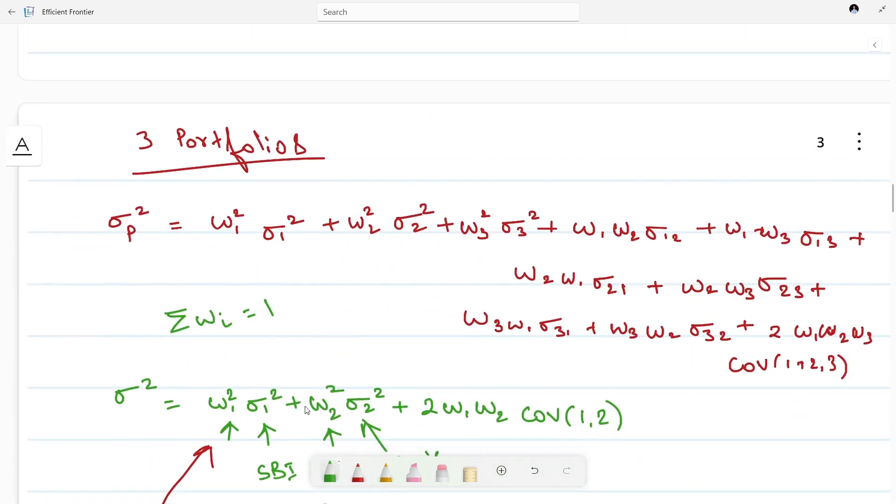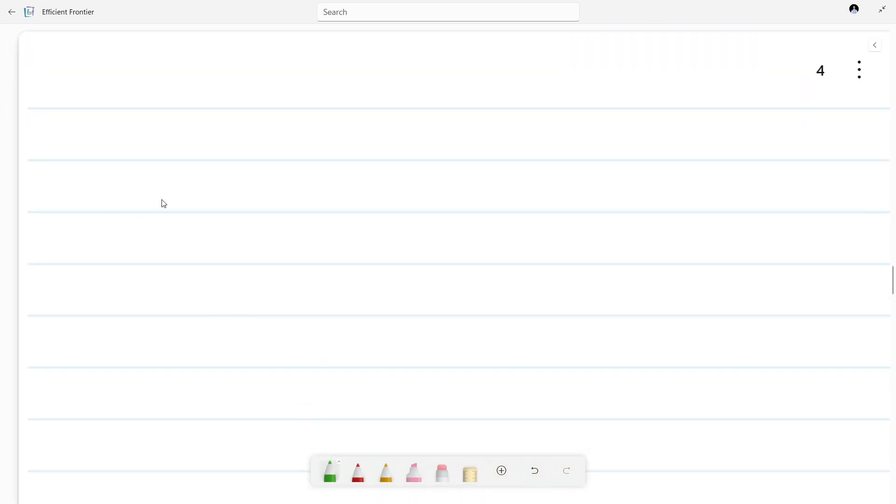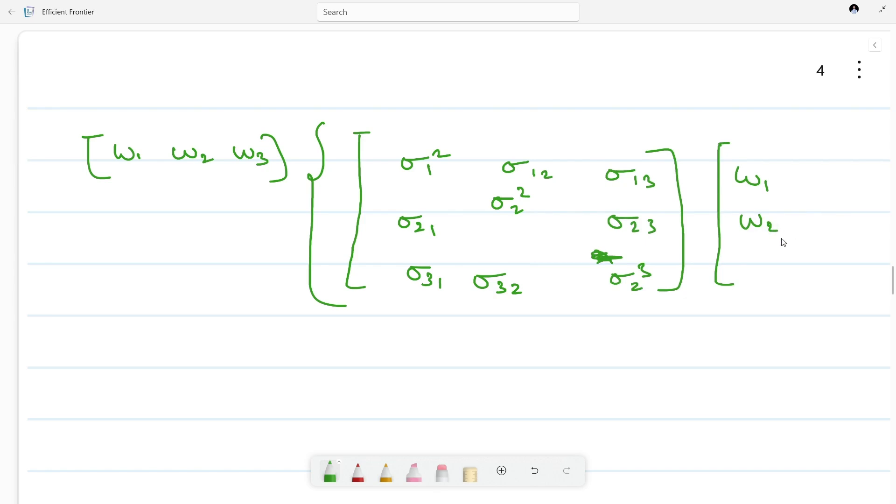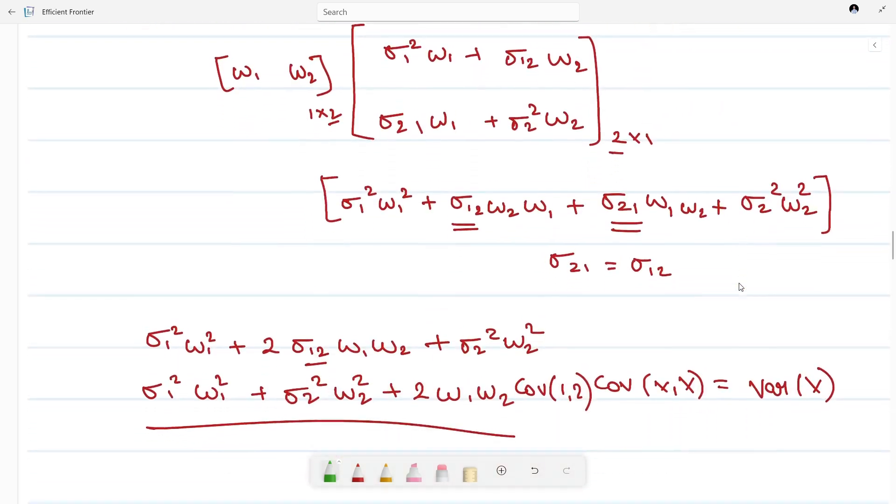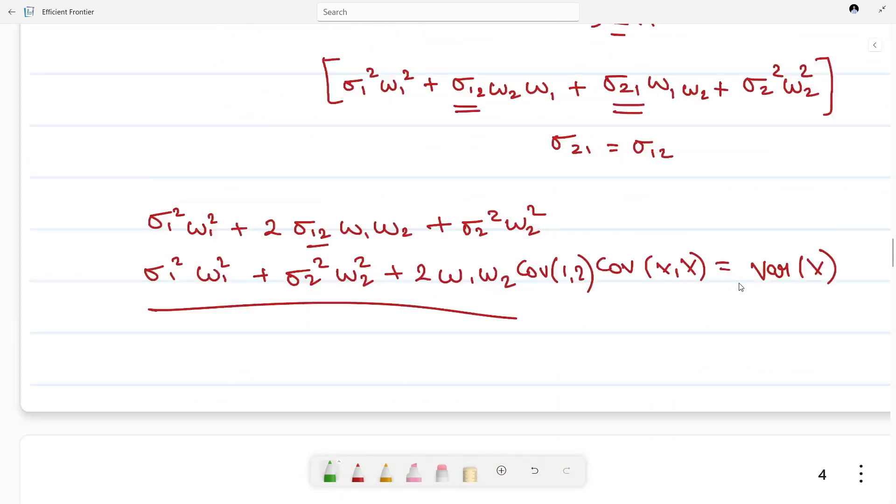Similarly for the 3 portfolio case we can make the matrix multiplication. This we can write it as [W₁, W₂, W₃]. Then the variance-covariance matrix with σ₁², σ₂,₁, σ₃,₁ in first row; σ₁,₂, σ₂², σ₂,₃ in second row; and σ₁,₃, σ₃,₂, σ₃² in third row. And these are weights [W₁, W₂, W₃] transpose. And once you will solve it, you will be getting our equation only. So that's it for the video. We will be seeing in the next video how to do it on Excel. See you in the next video.